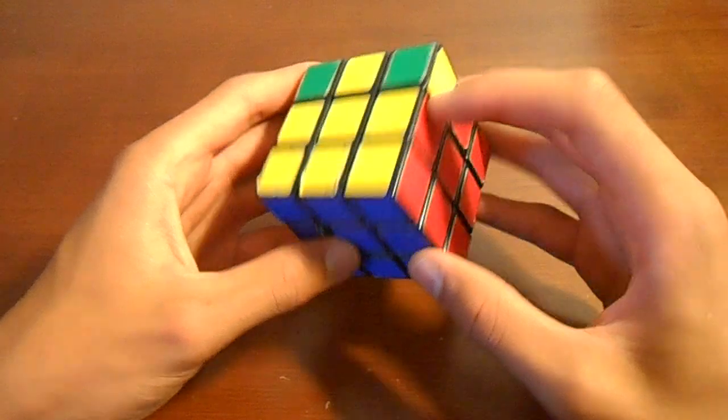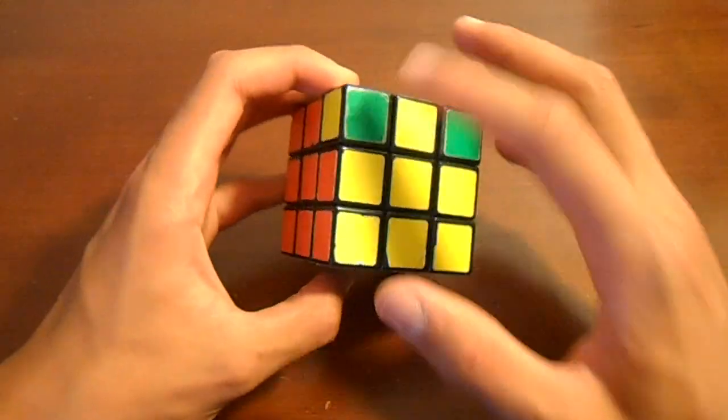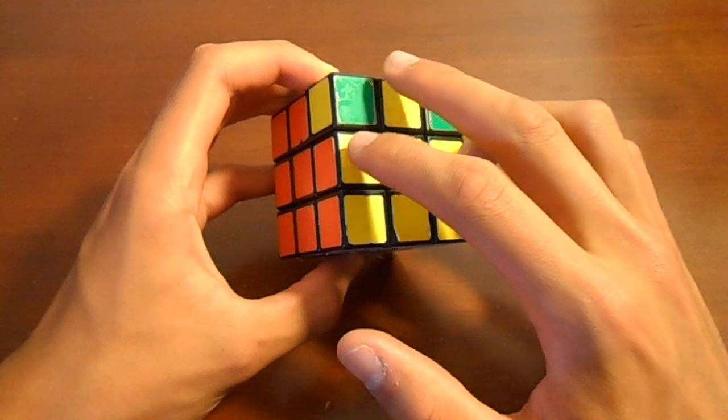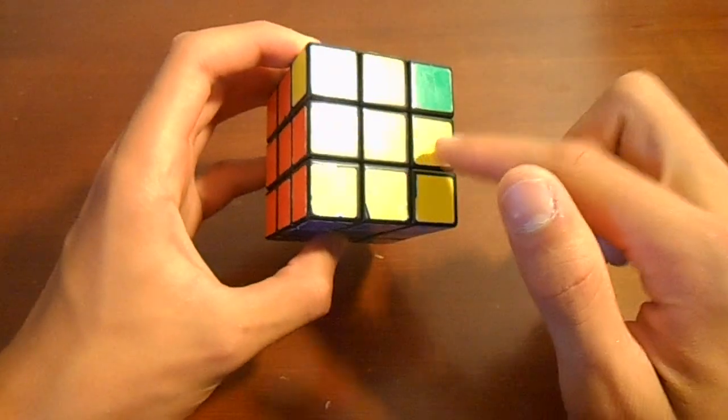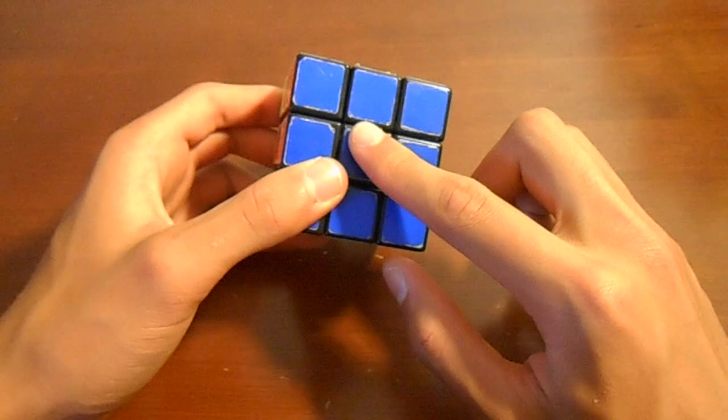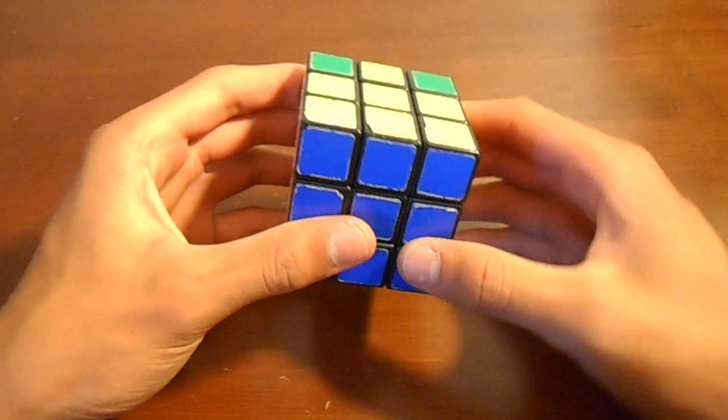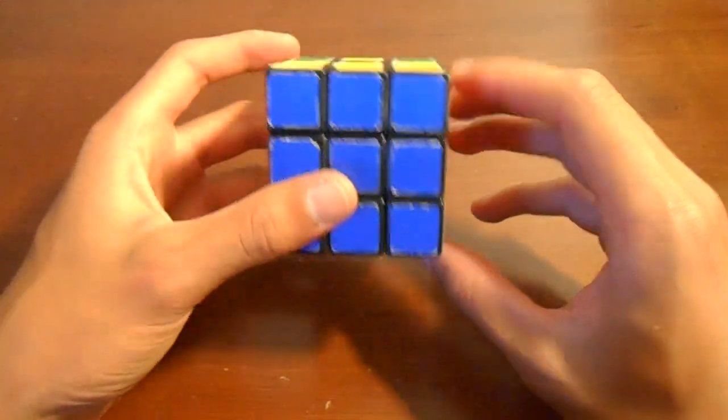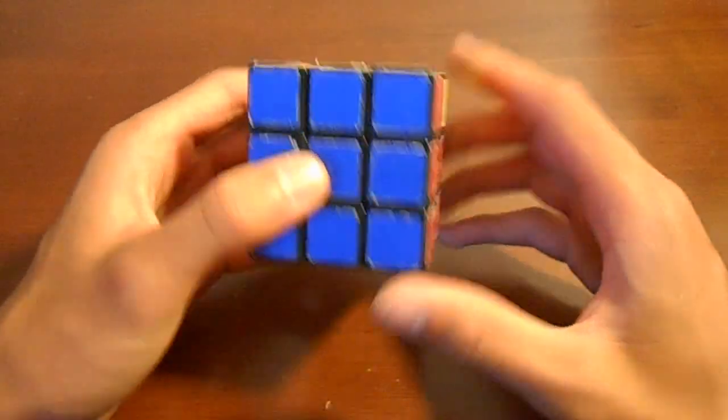And you may have to do that twice, but in this case it actually did solve. So that actually cycles these three edges around until they're solved, which is why you only can have one edge piece matching when you start it. So you may have to do that again. I'll go over this algorithm a couple more times so you guys can learn it.